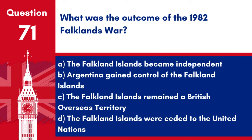Question 71. What was the outcome of the 1982 Falklands War? A. The Falkland Islands became independent. B. Argentina gained control of the Falkland Islands. C. The Falkland Islands remained a British overseas territory. D. The Falkland Islands were ceded to the United Nations. Answer: C. The Falkland Islands remained a British overseas territory. The outcome of the 1982 Falklands War was that the Falkland Islands remained under British sovereignty.